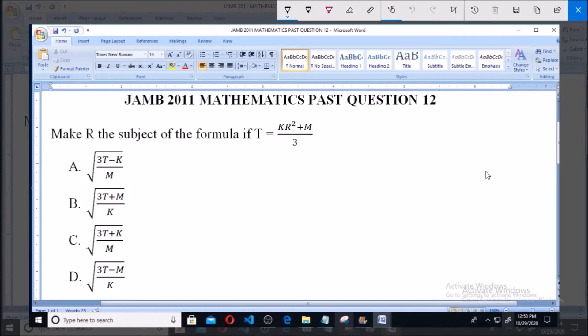Now we have to make R the subject of the formula. That is, we have to make R to be in the position of T. Looking at this, we have T equals KR squared plus M all over 3.